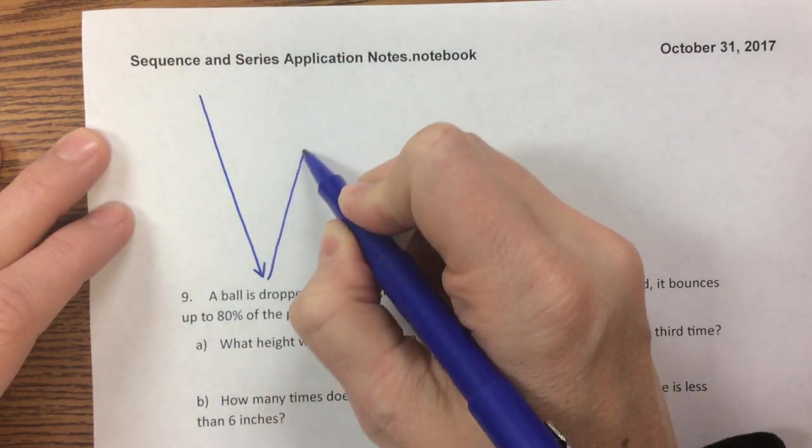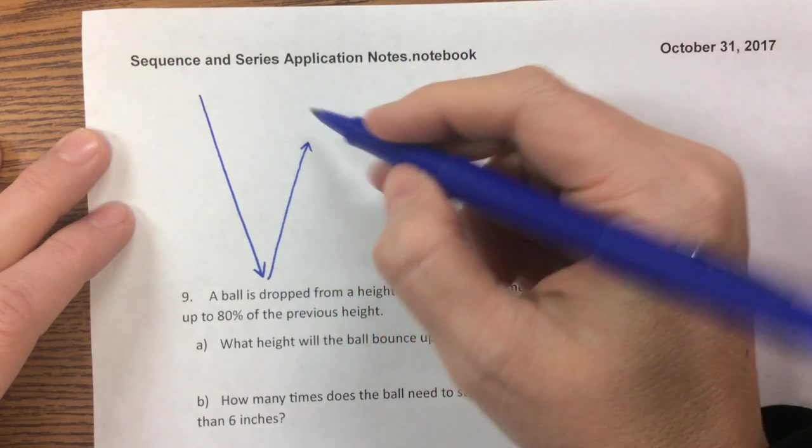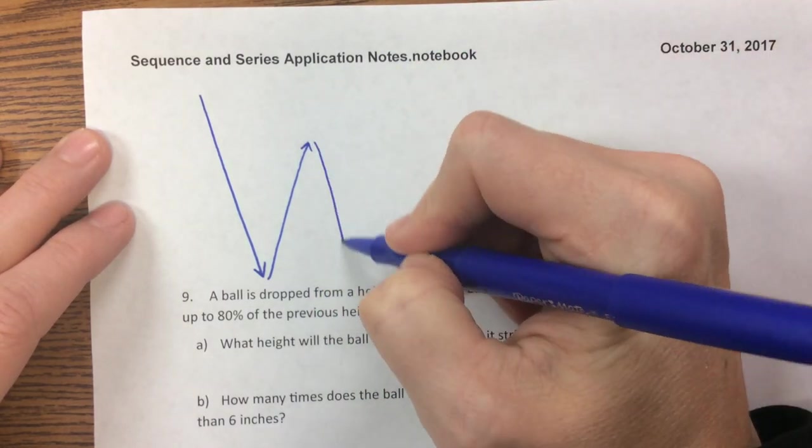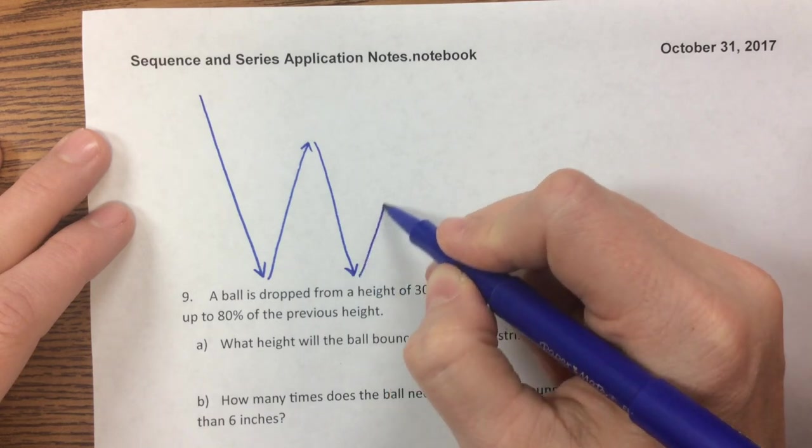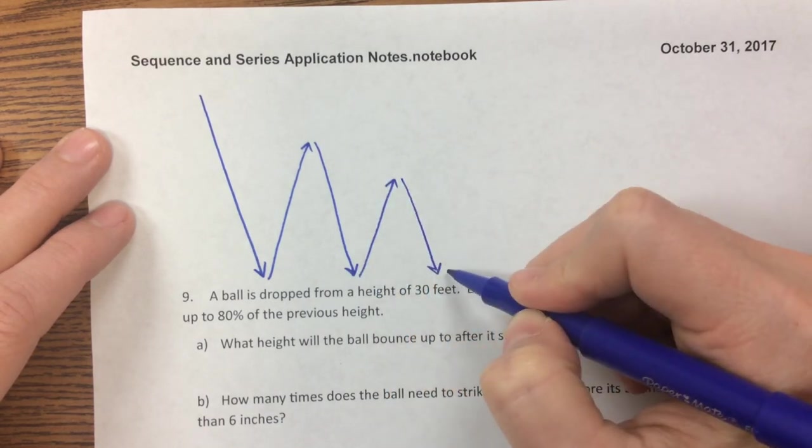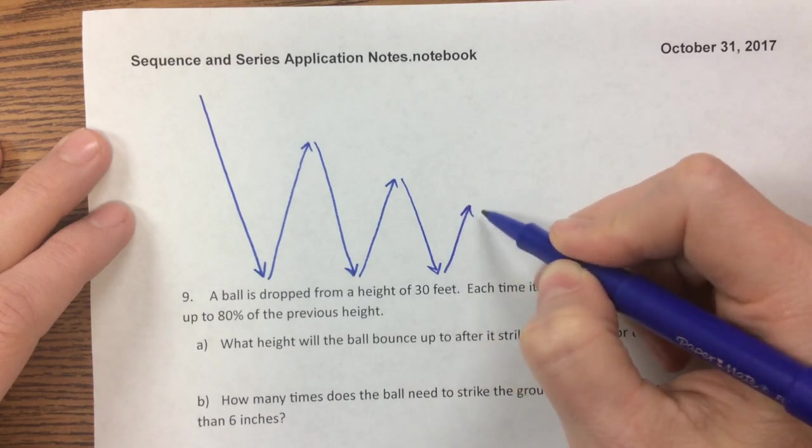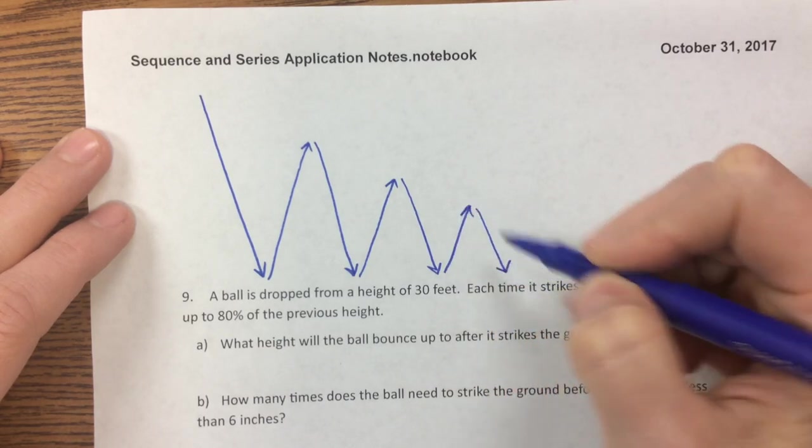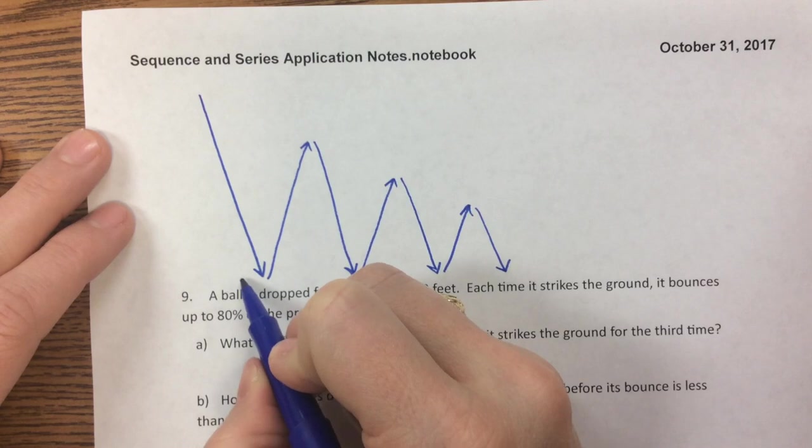So it comes down, hits the ground, and then it bounces back up to 80%, roughly. I'm not drawn to scale. Then it falls back down once it goes up to that height, and then it bounces back up 80% of that height. Then it falls back down, then it bounces back up 80%, and it keeps doing this forever.